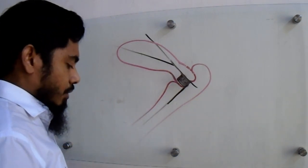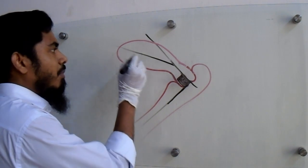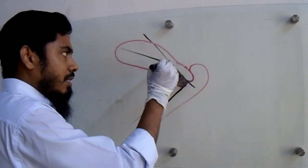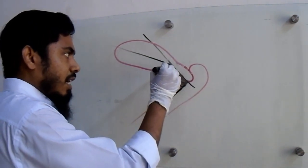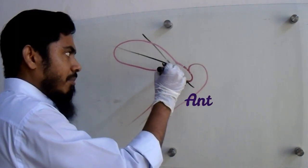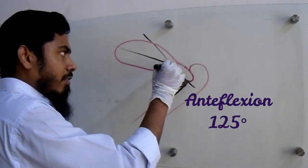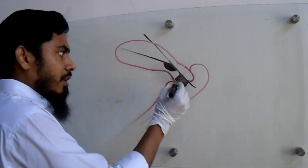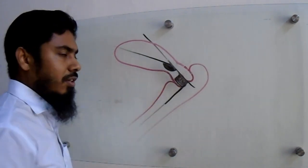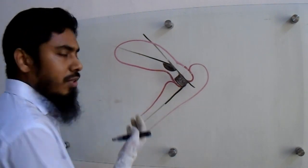The angulation between the long axis of the body of the uterus and the long axis of the cervix of the uterus — this angulation is termed as anteflexion. So here, this one is anteversion, and this one is anteflexion.